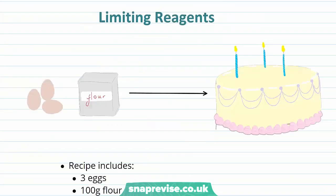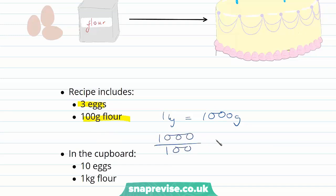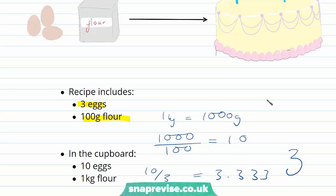I've got an analogy to explain this and make it a bit clearer. Here we have some ingredients for a cake. The recipe includes, amongst other ingredients, three eggs and a hundred grams of flour. In the cupboard we have ten eggs and one kilo of flour. Now, the one kilo of flour — that's one thousand grams — allows us to make ten cakes, knowing that there's a hundred grams required for each cake. That's a thousand divided by a hundred to give us ten. We have ten eggs in our cupboard and three are required for every cake. Ten divided by three gives us 3.333 — that's three and a third — so we can only make three cakes. We can see that here the eggs are our limiting reagent.